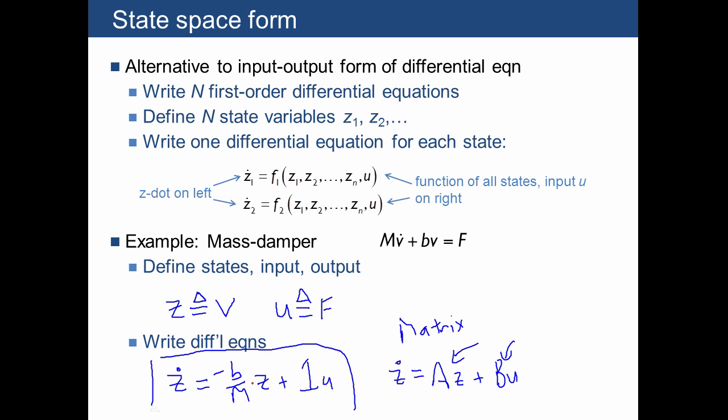Now in this case, these matrices are not very interesting, because capital A is just a value negative b over m, and capital B is just equal to 1. But nevertheless, in general, for our state space equations, we can write them in forms of matrices.